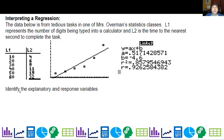In this case, the number of digits explains the time. So explanatory is digits and the response is time in seconds.